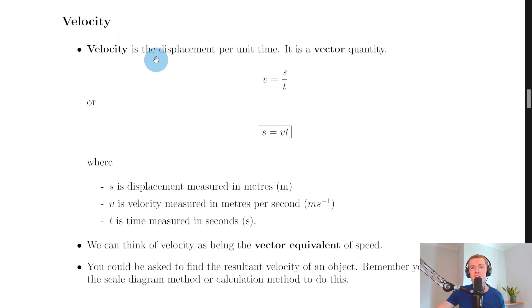We'll start with the definition of velocity and then we'll look at its equation and then we'll finish by looking at how to find the resultant velocity of an object.